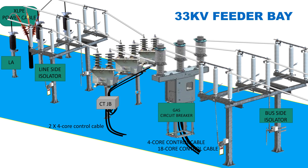The main purpose of a termination schedule is to document the physical connections of wires between electrical components. It allows you to easily identify where a wire or cable is to be terminated and its corresponding connections on the other side, such as between a circuit breaker mechanism box and the respective control relay panel termination block.